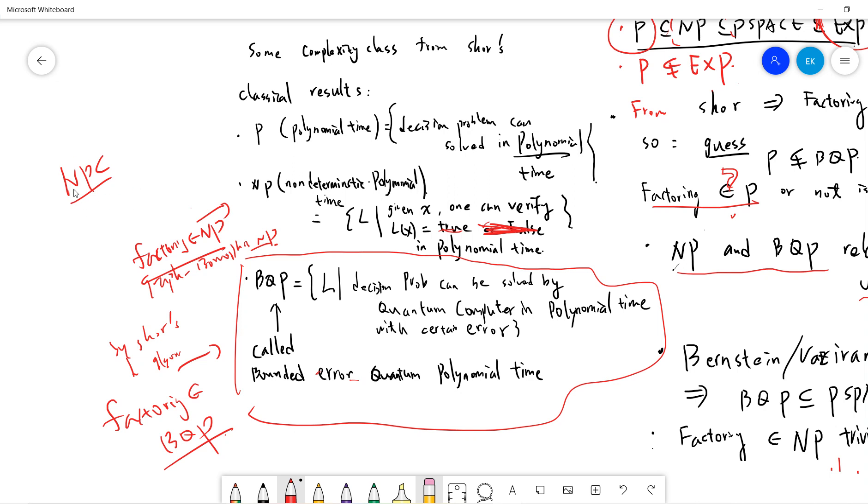There are many very famous NP-complete problems, like the three-SAT, the traveling salesperson, and the Hamiltonian cycle. This is a classical result.